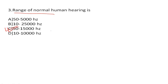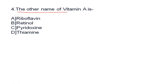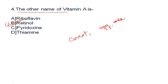The right answer is C. The other name of Vitamin A is retinol. Retinol is a fat-soluble vitamin and it is essential for healthy vision, teeth, and skin. Sources include carrot, grapes, egg, meat, and milk.